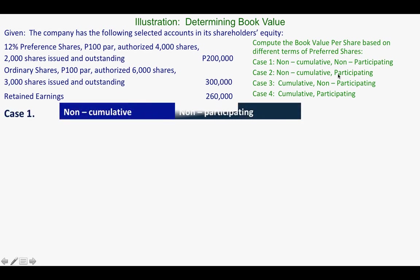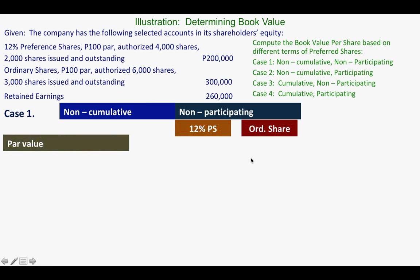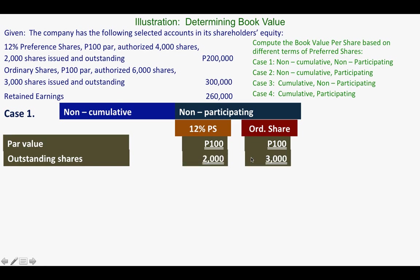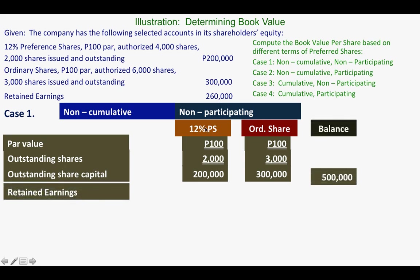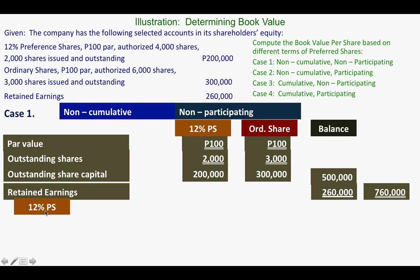Case 1: non-cumulative, non-participating. We need the basic information — the par value and outstanding shares. The outstanding share capital is 200,000 for preferred and 300,000 for ordinary. We have to determine how much of the 260,000 retained earnings will go to preferred share and how much will go to ordinary share. For non-cumulative, we give 12% to preferred shares — 12% of 200,000 gives us 24,000.